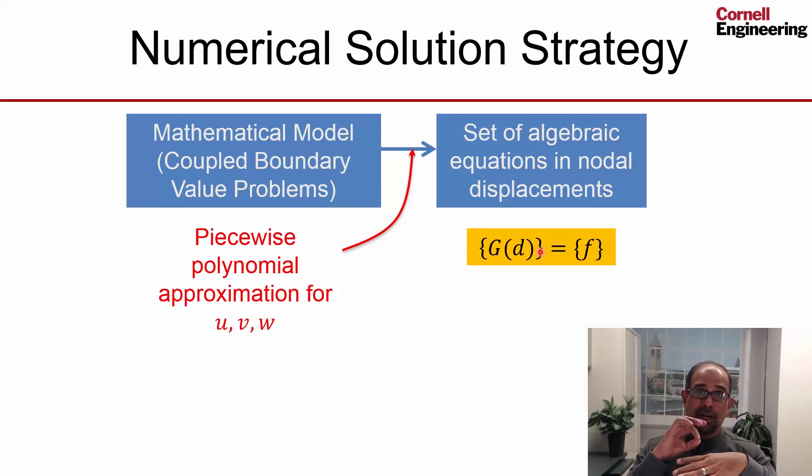because traction becomes unknown and becomes coupled of displacement. So when you're writing the algebraic equation at the interfaces, you could get, because the traction, the way you express traction, you could get non-linear terms such as products of two unknown displacements.